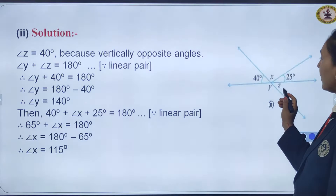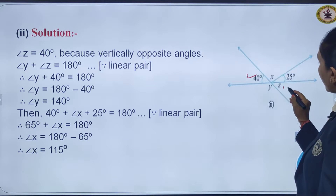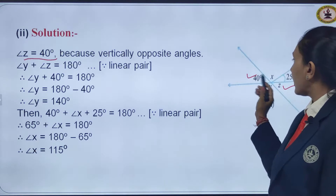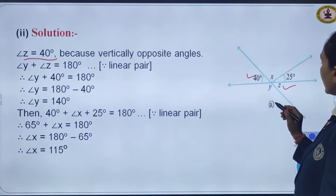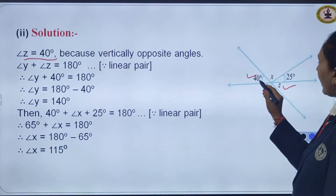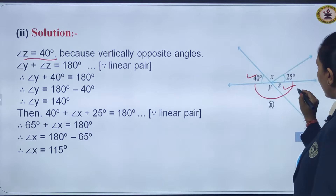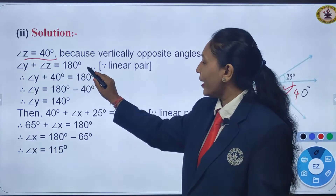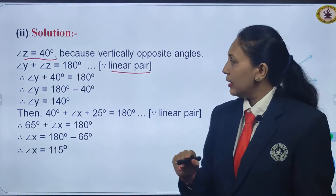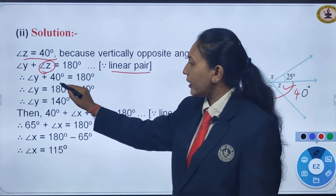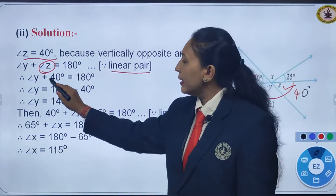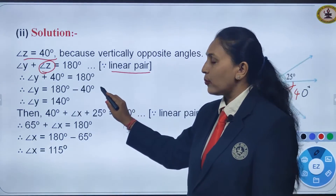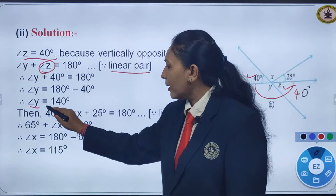In the next figure, x, y, and z are asked. First, let us find z because 40 degrees and angle z are vertically opposite angles, so z is also 40 degrees. Now, angle y and angle z form a linear pair, meaning they sum to 180 degrees. So angle y plus 40 degrees equals 180 degrees. Taking 40 to the other side, angle y equals 140 degrees.